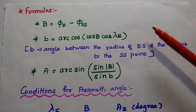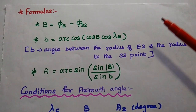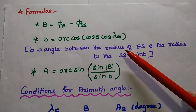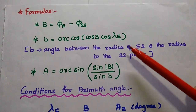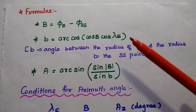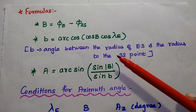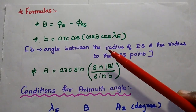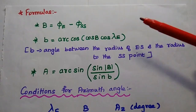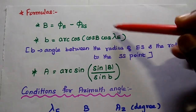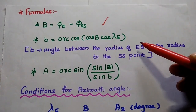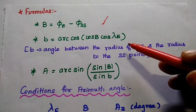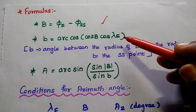Next are the important formulas used in look angle calculations. The first one is capital B, which is the difference between the longitude of the earth station and the subsatellite point. So B is equal to phi_e minus phi_ss. The next is small b, which equals arccos of (cos B × cos lambda_e).